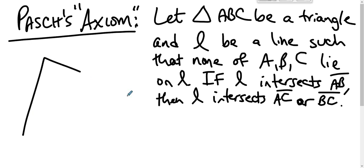Just to be clear on this, here is triangle ABC. You have some line that intersects segment AB, but not at A and not at B, because none of A and B and C lie on L.